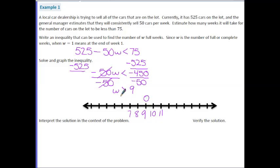Now if it was closed, if there was a line underneath this and 9 was included, we would shade in the circle.